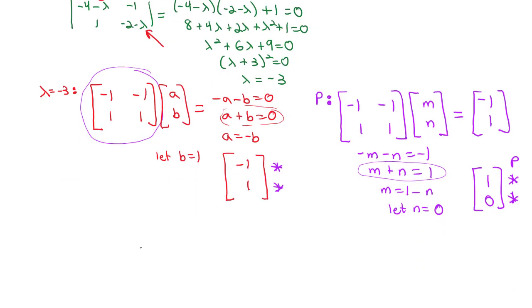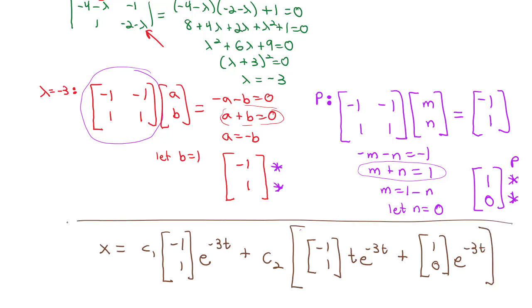So now when I get to my final answer, x equals c1 times my eigenvector of negative 1, 1, times e to the negative 3t, that's just like it was before, plus for our c2 to get that linear independence, we take the eigenvector negative 1, 1, times t e to the negative 3t, plus that p vector 1, 0, times e to the negative 3t. That becomes my solution to the system with the double repeated root.